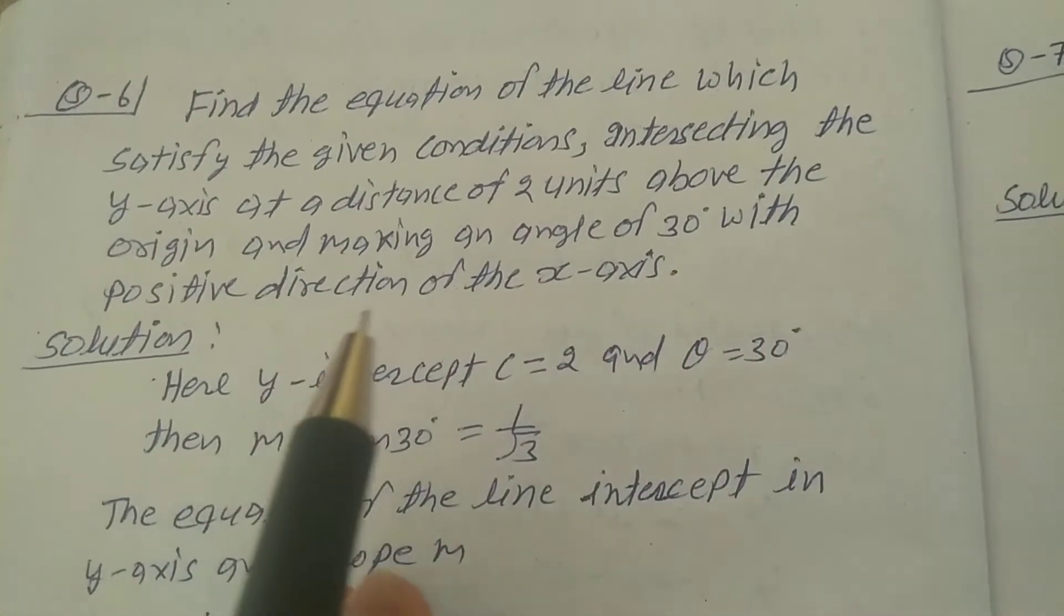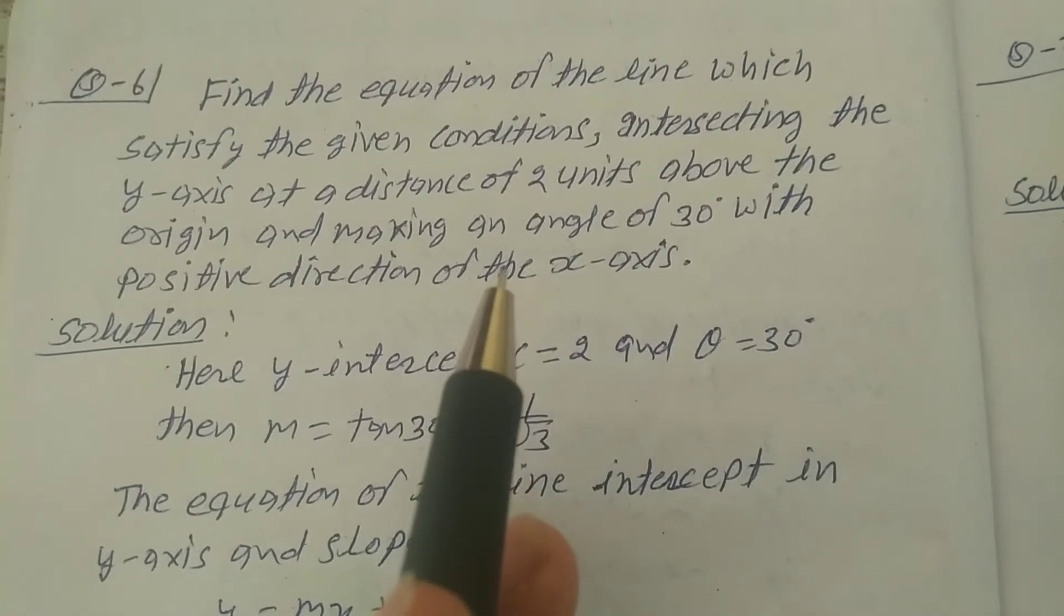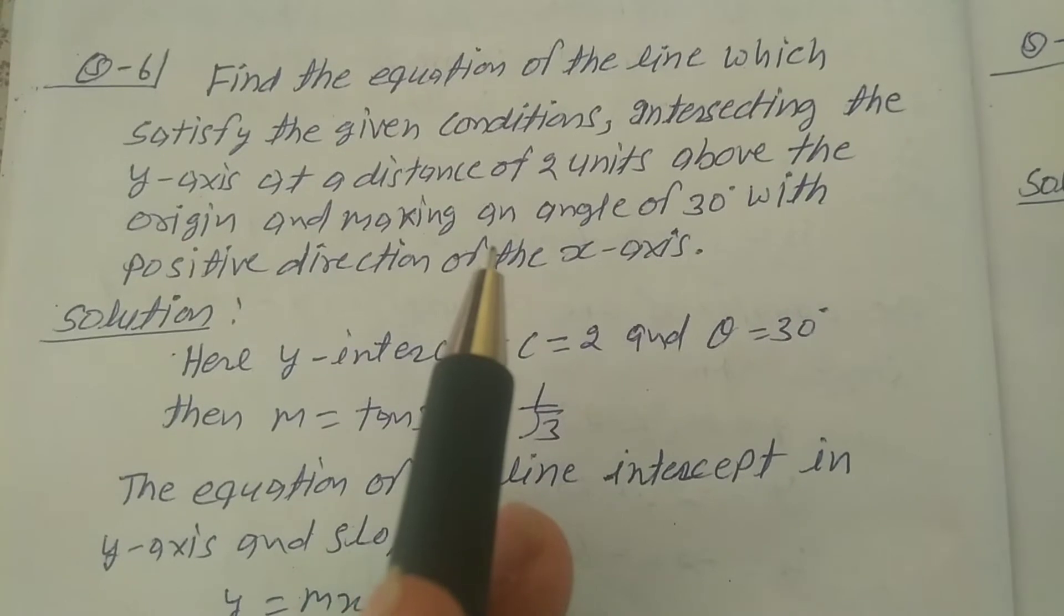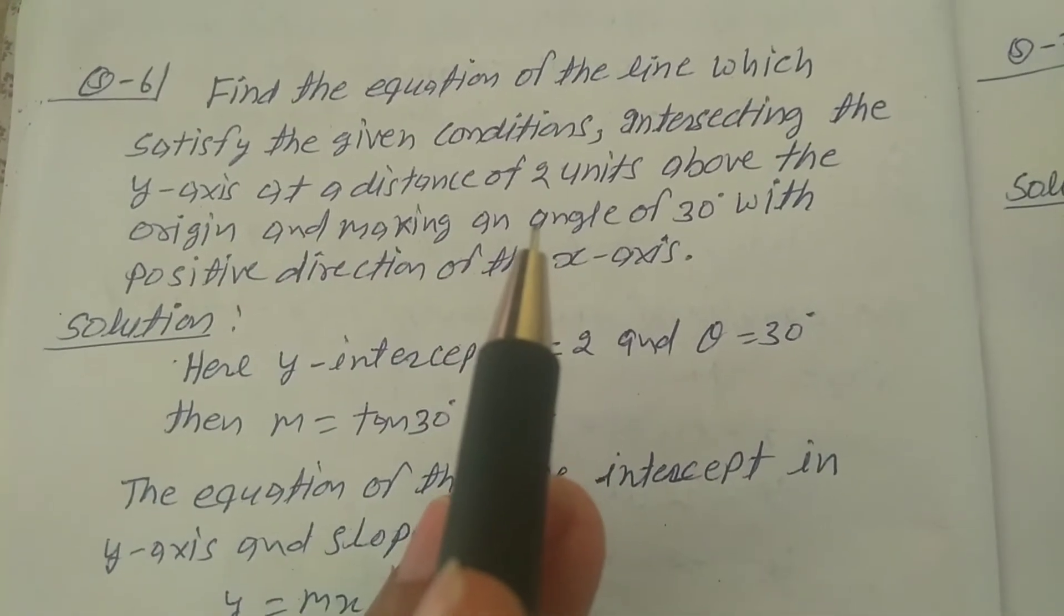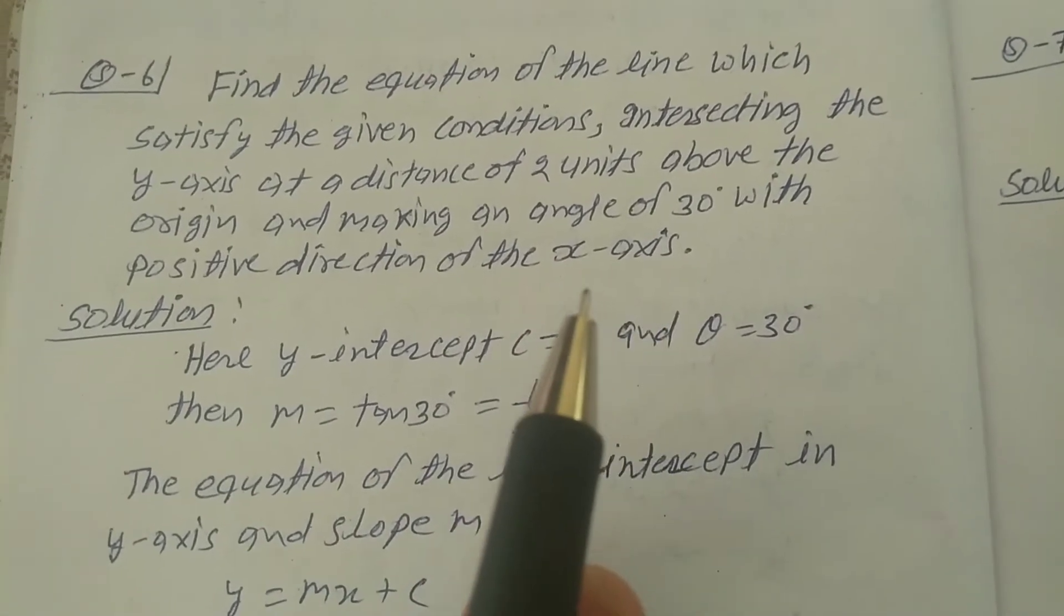The meaning of the question is to find the equation of a line that intersects the y-axis 2 units above the origin and makes an angle of 30 degrees with the x-axis.